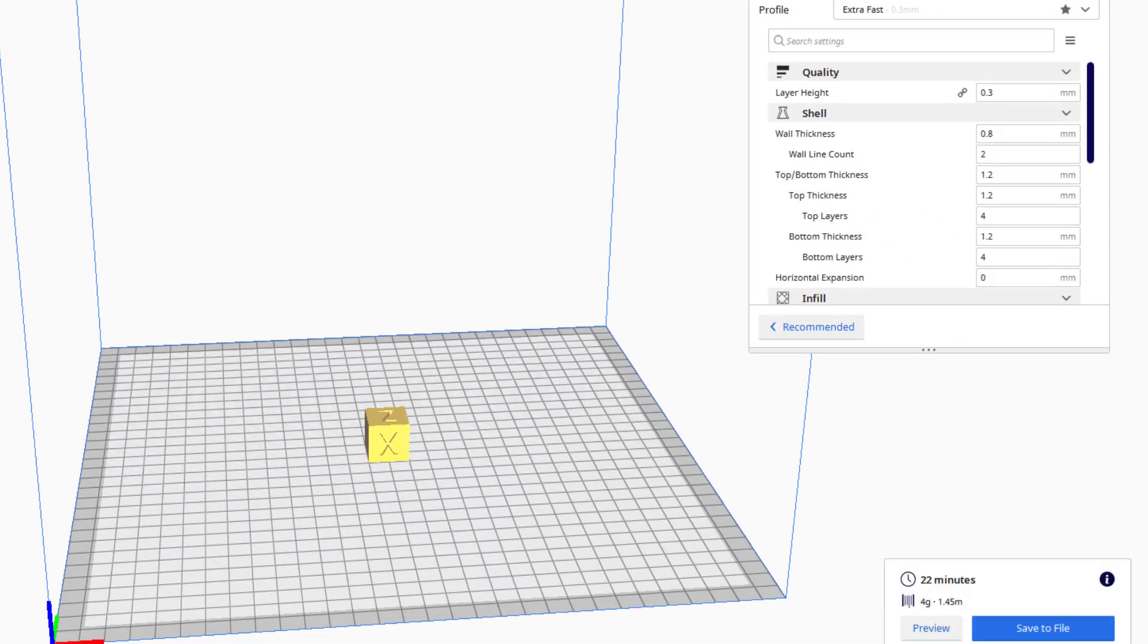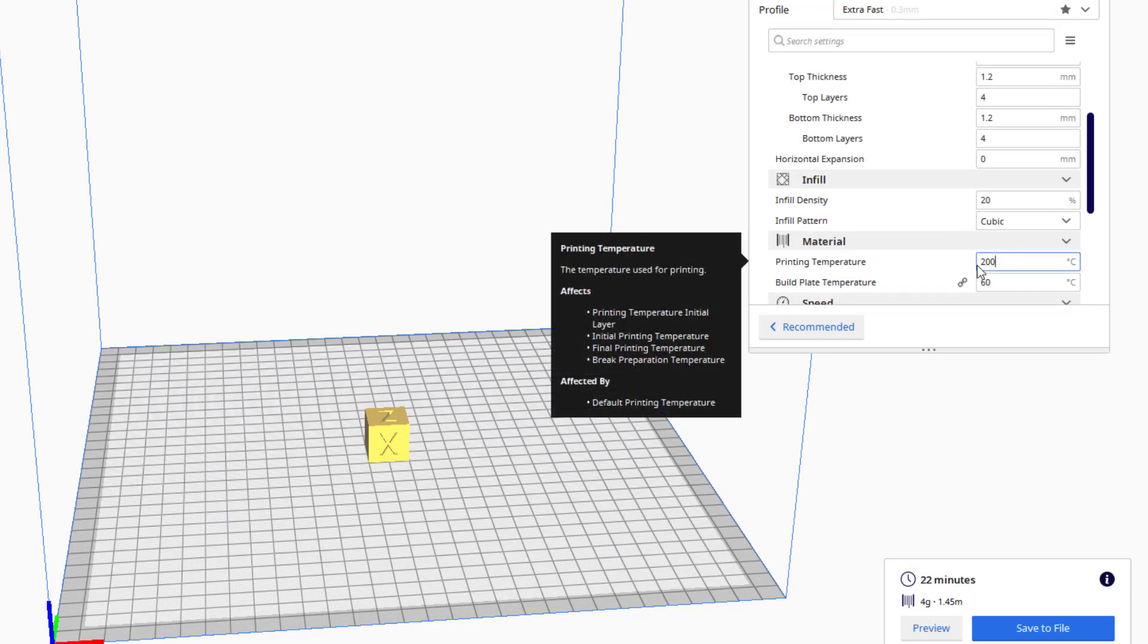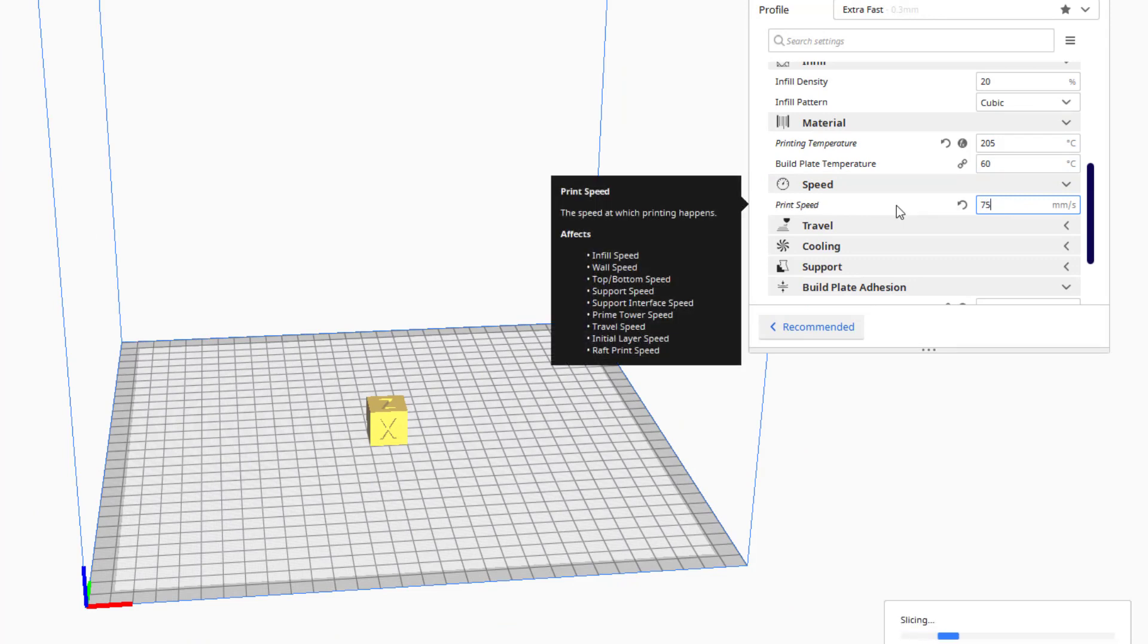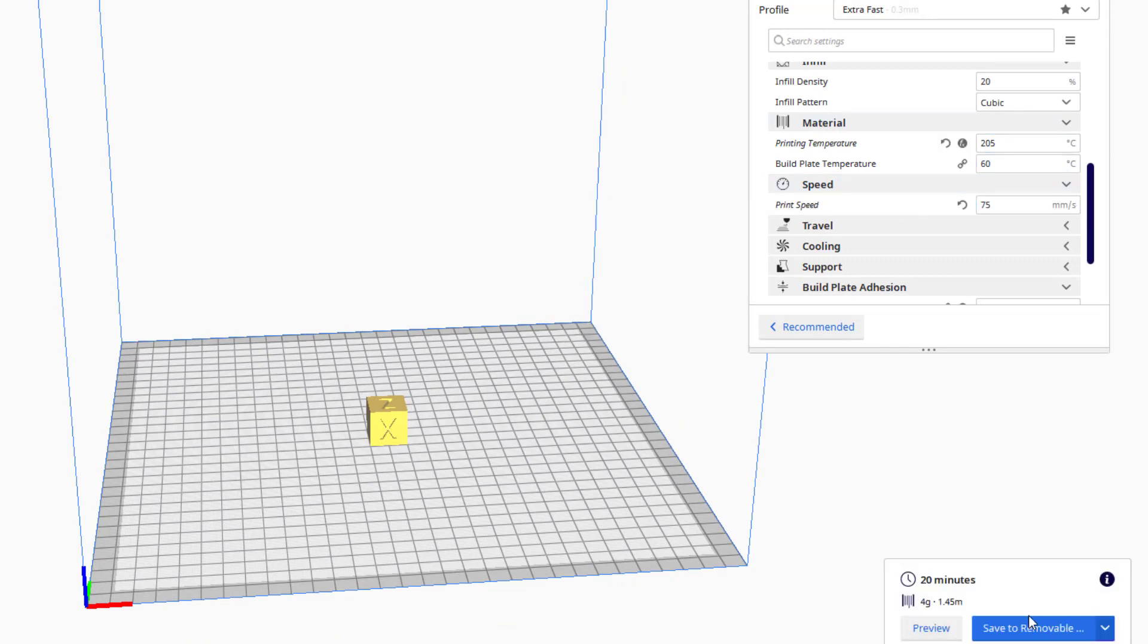I am using PLA so let's double check we've got our settings set for PLA. I am gonna bump it up to 205 and I'm gonna make the speed 75.